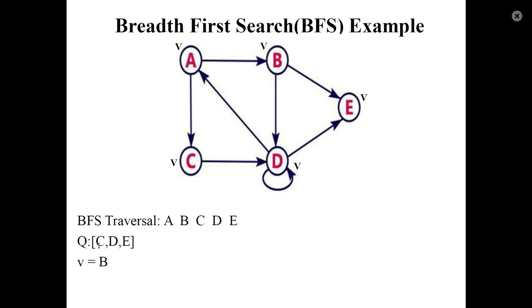Next, dequeue C. C's unvisited neighbors are checked. Next, dequeue D. D's neighboring nodes A, C, and E are all already visited. Next element is E. E's neighboring nodes are all visited.